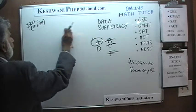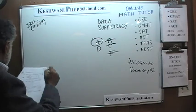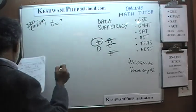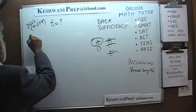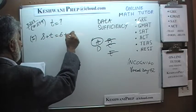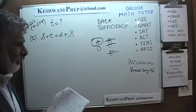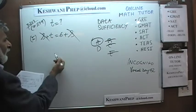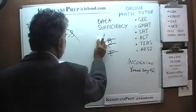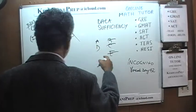299 asks us: how much is T? The first statement tells us that S plus T equals 6 plus S. S drops out immediately, giving us T equals 6. The first statement by itself is enough, so the answer must be either A or D.